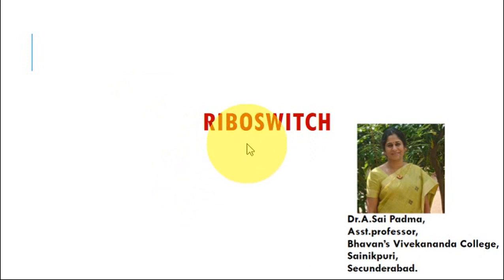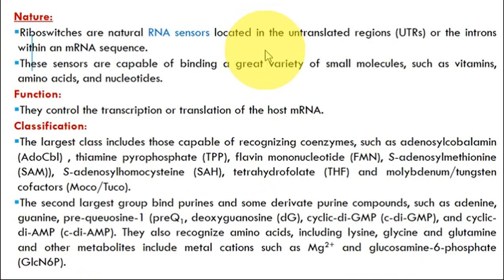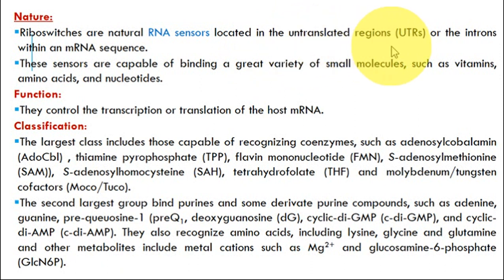In this video, I will be looking at riboswitches. What are these riboswitches? The nature of the riboswitch is RNA — specifically mRNA — where the riboswitches are located either at the 5' untranslated regions, or at the 3' untranslated regions, or sometimes within the introns within the mRNA sequences. These sensors are capable of binding a great variety of small molecules such as vitamins, amino acids, and nucleotides.